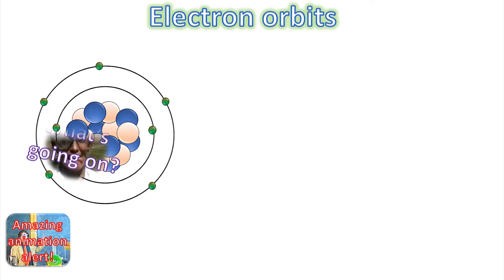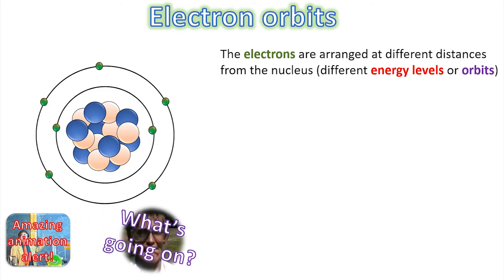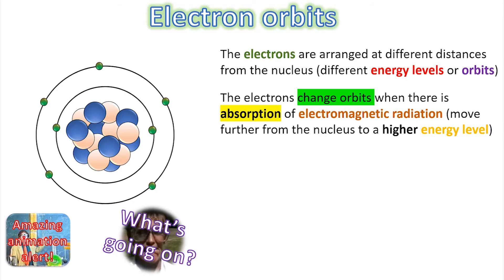Quick summary! So if they move up an orbit, then they have absorbed electromagnetic radiation, and when they drop back down to a lower orbit, they emit electromagnetic radiation.